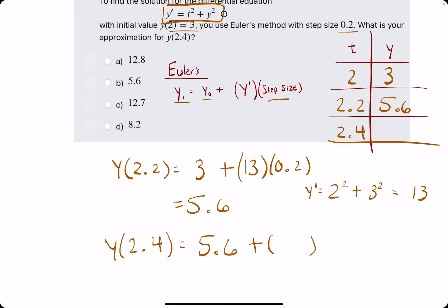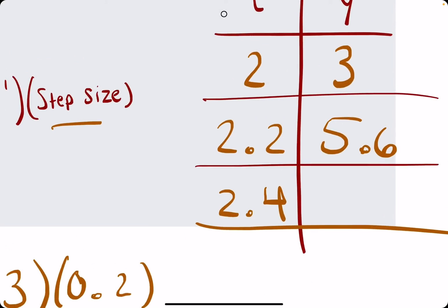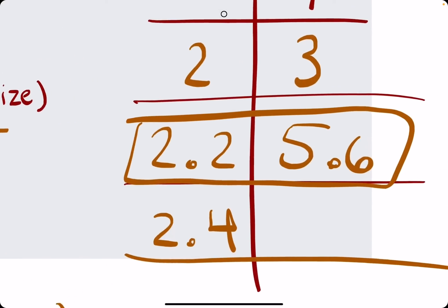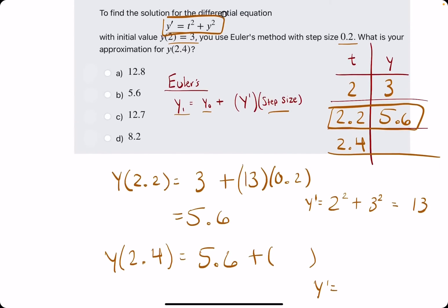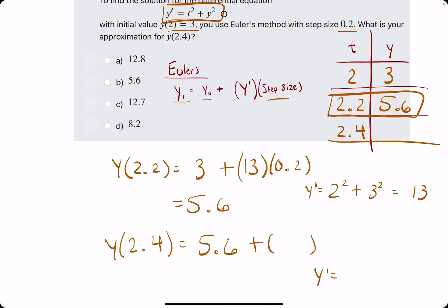We will add whatever we get for our new y prime value, and again, we calculate the new y prime value with this information now, since this is now our new previous information, our previous t value and y value. So t squared, so 2.2 squared plus y squared, so 5.6 squared.